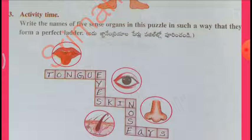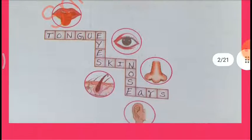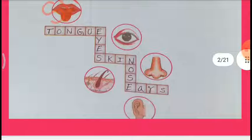Activity Time: Write the names of 5 sense organs in this puzzle in such a way that they form a perfect ladder. The answers are: Tongue, Eyes, Skin, Nose, Ears.